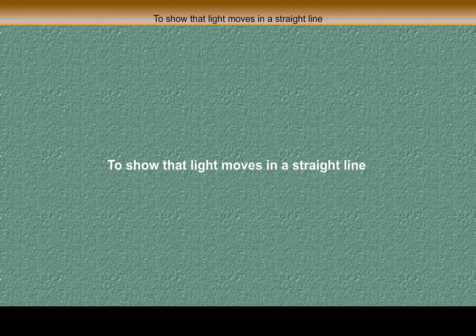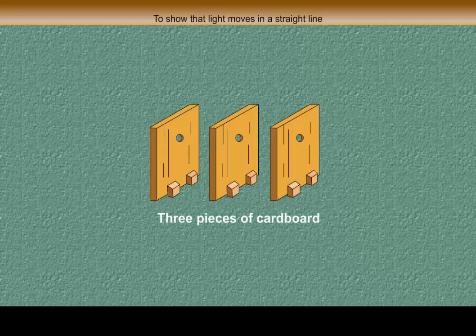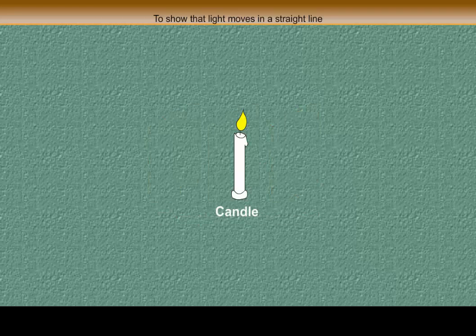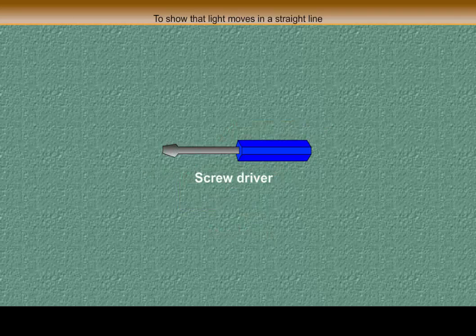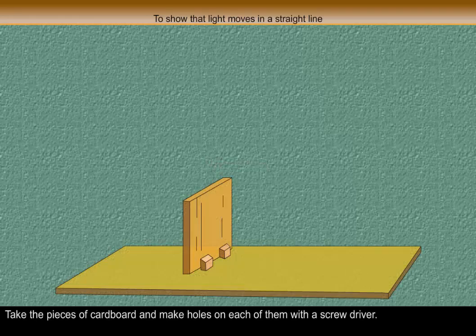To show that light moves in a straight line. Things required: three pieces of cardboard, a candle, a matchbox, a ruler, a screwdriver. Procedure: take the pieces of cardboard and make holes on each of them with a screwdriver.